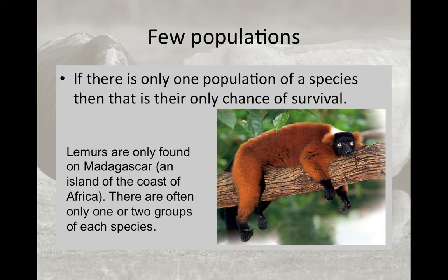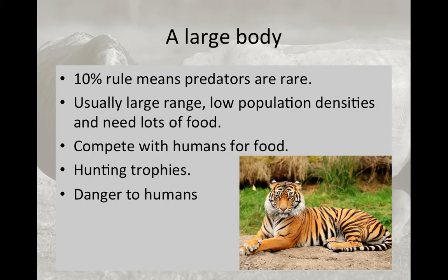Having only one or very few populations is another barrier — if that single habitat is wiped out, the entire species is lost. Lemurs, found only in Madagascar, exemplify this: if the group is gone, the species is gone. There aren't subgroups elsewhere that the species can migrate with. This also leads to low genetic variability because the population inbreeds without access to another group for genetic flow.